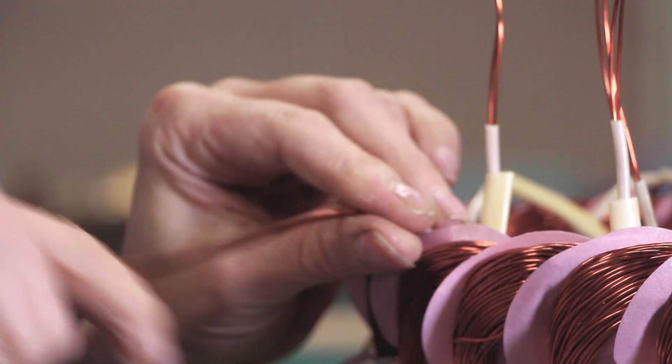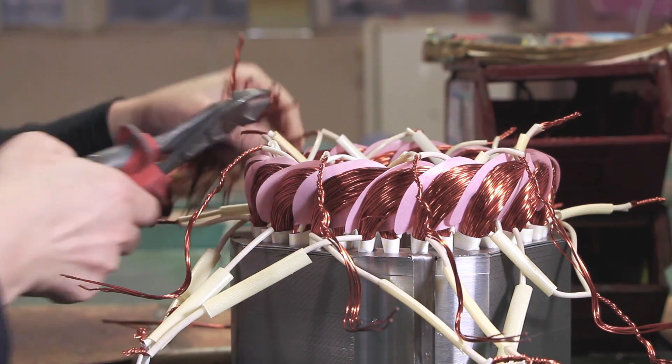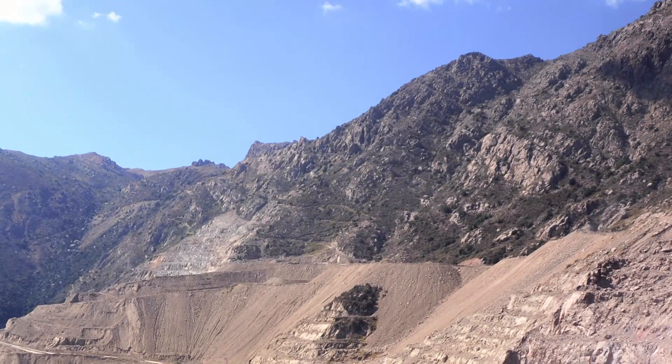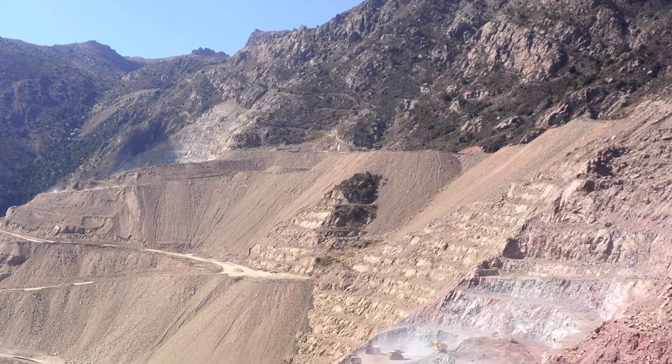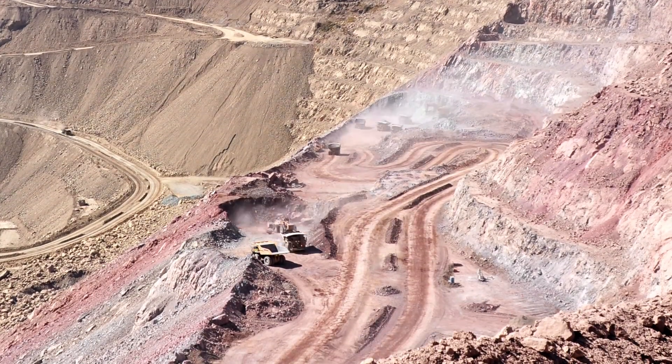There are coils in every electric motor. Wire around the magnetic core is traditionally made of copper. Copper is a valuable heavy metal that could possibly be replaced with material that is more easily available.